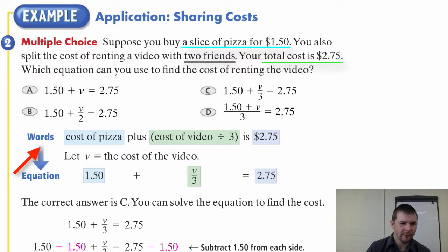So in words, we can represent this problem as the cost of pizza plus the cost of video divided by 3 is 2.75. And that, of course, was your total cost. So let's let v represent the cost of the video. In this case, the cost of the pizza is $1.50 plus the total cost of the video divided by 3, which is the cost of the video shared by us or the portion that we contributed, equals the total, $2.75, the total spent by you.